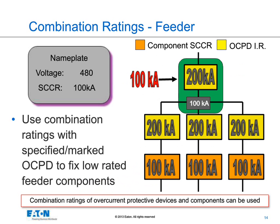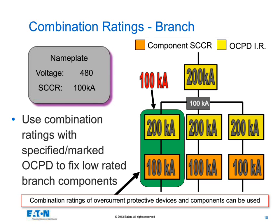Here's an example of how to apply combination ratings in the feeder. Bussmann offers power distribution blocks with high SCCR when protected by a specific type of fuse. In this instance, we might have a high SCCR PDB provided we have a specific ampacity and class of fuse ahead of it, and that combination would become 100KA. Similarly in the branch — perhaps a contactor or motor starter — the manufacturer has tested that component with a specific overcurrent device, and the combination of that overcurrent device and the component is good for 100KA.